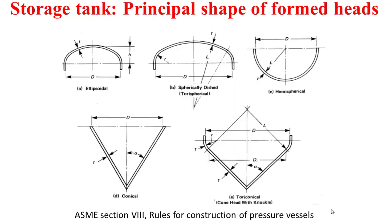Some principal shapes are distinguished for the formed heads. As you can see, we can distinguish the ellipsoidal head, the tori-spherical head, the hemispherical head, the conical head, and the tori-conical head.